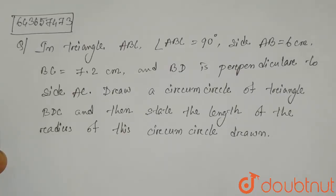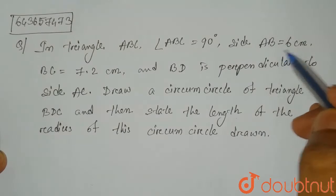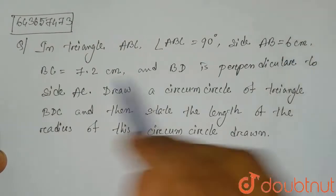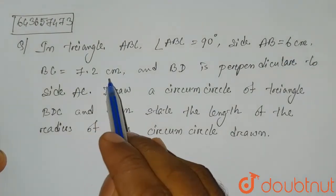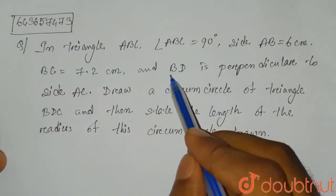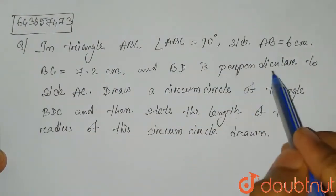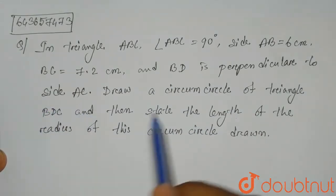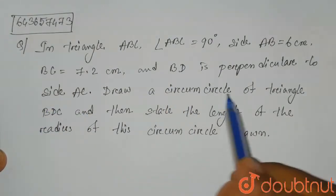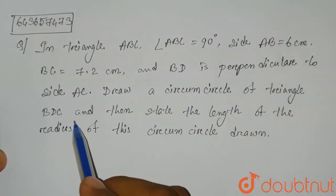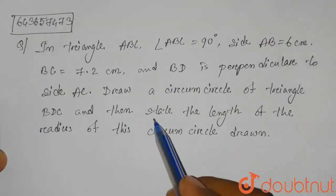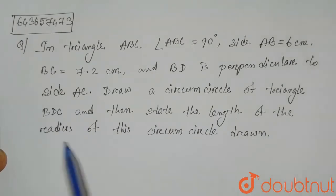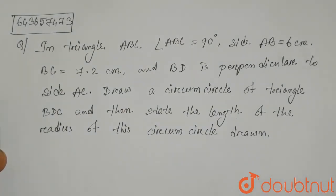Hello everyone. The question is: in triangle ABC, angle ABC is 90 degrees, side AB is 6 centimeters, BC is 7.2 centimeters, and BD is perpendicular to side AC. Draw a circumcircle of triangle BDC and then state the length of the radius of this circumcircle drawn.